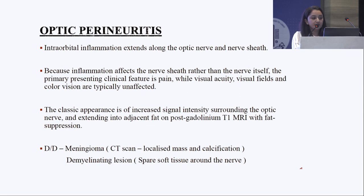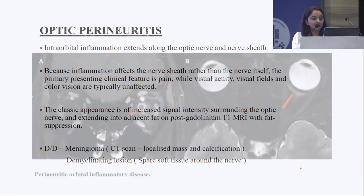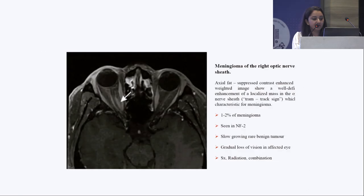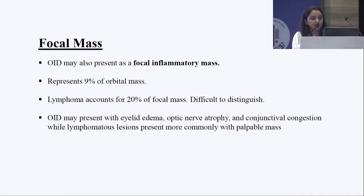Optic perineuritis is intraorbital inflammation extending along the optic nerve and nerve sheath. Because inflammation is affecting the nerve sheath rather than the nerve itself, the primary presenting features are mostly pain, while vision, visual fields, and color vision are typically unaffected. Important differentials are meningioma and demyelinating lesions. Meningioma can be differentiated by CT scan.